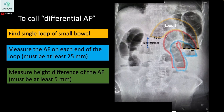To call differential air fluid levels, we first identify a single loop — let us consider loop number 1. Next, we measure the air fluid on each end, obtaining 2.5 cm and 3.2 cm. The height difference is 2 cm. We have fulfilled criteria 1, 2, and 3. Therefore, we can now say that differential air fluid levels are present in this radiograph.